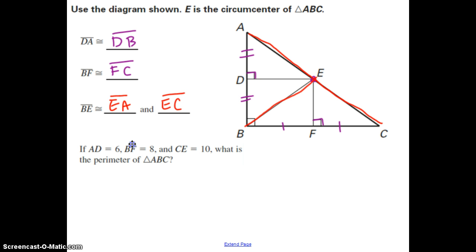If AD is equal to 6, BF is equal to 8, and CE is equal to 10, what is the perimeter of triangle ABC? Well, we know that these are going to be congruent, so this is also 6. FC is also going to be 8, and EA is also going to be 10.